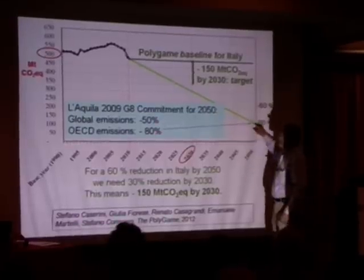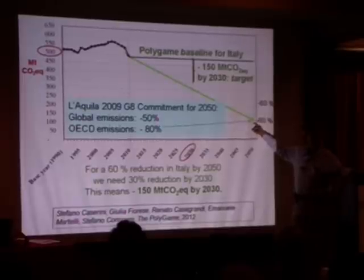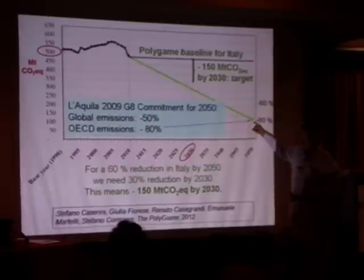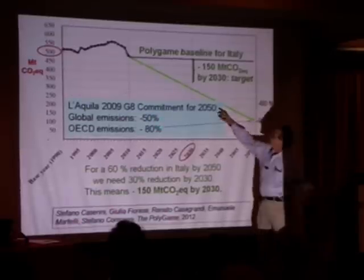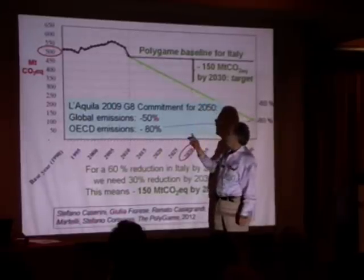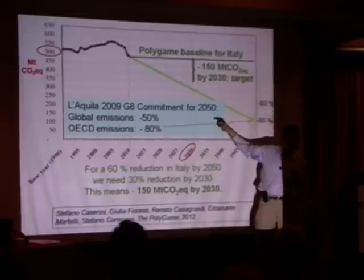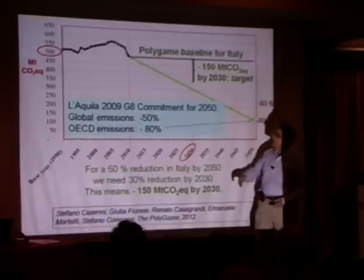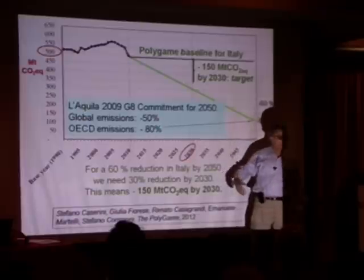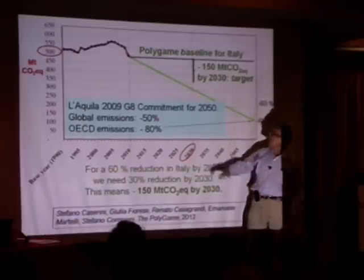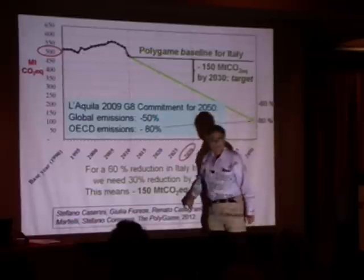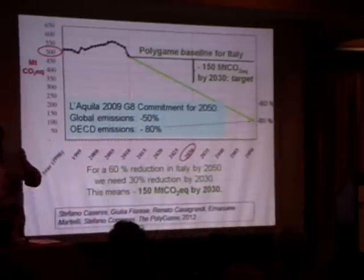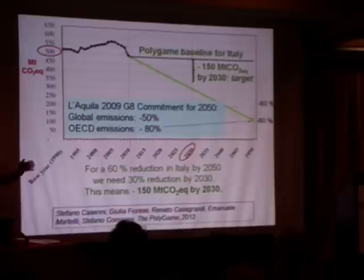The Aquila goal calls for the developed world to reduce its emissions by 80 percent. The game has you do almost the whole job by 2030. This makes sense: it's consistent with the global picture — you're making it possible for developing countries to emit more carbon dioxide while the planet stays safe by working so hard in Italy. The game for Italy is a projection of the global framework I've been showing you.